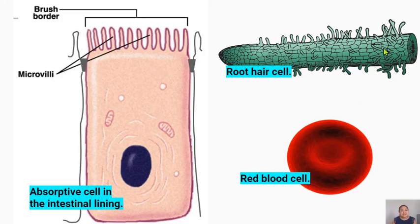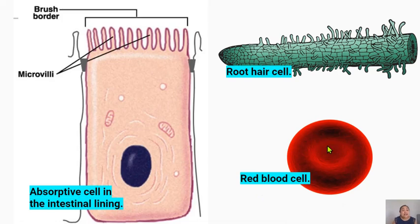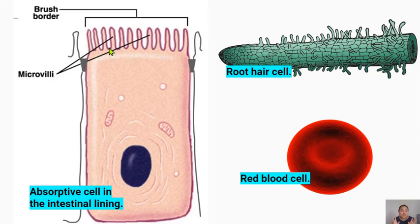Different cells have developed different adaptations to increase their surface area to volume ratio. Some cells such as root hair cells increase their surface area by having an elongated shape — this increases the amount of membrane available for diffusion while reducing the volume of the cell. Other cells like the red blood cell have a biconcave shape, a disc-like shape with a flattened center almost like a donut, which increases the surface area available for oxygen to diffuse in and out. Other cells and organelles have many folds in their membranes — for example, cells that line our intestines are covered with folds called microvilli, which are long finger-like projections that create a very large surface area allowing for a maximum diffusion rate.